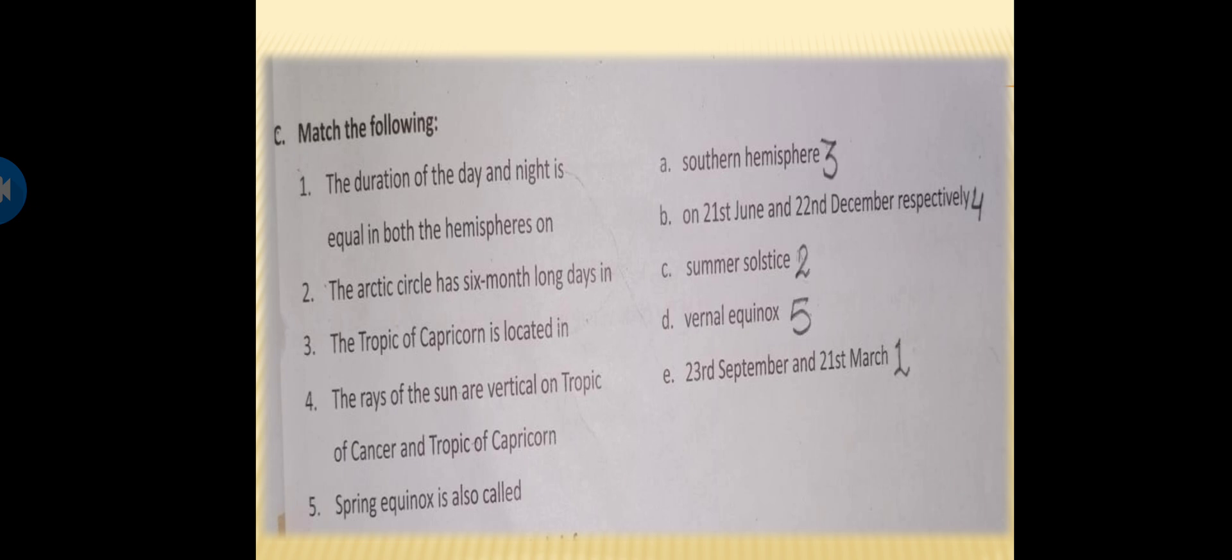Now come to question number 3. Tropic of Capricorn is located in, Tropic of Capricorn is located in which hemisphere? Southern hemisphere. Now come to question number 4. The rays of the sun are vertical on Tropic of Cancer and Tropic of Capricorn on 21st June and 22nd December respectively.